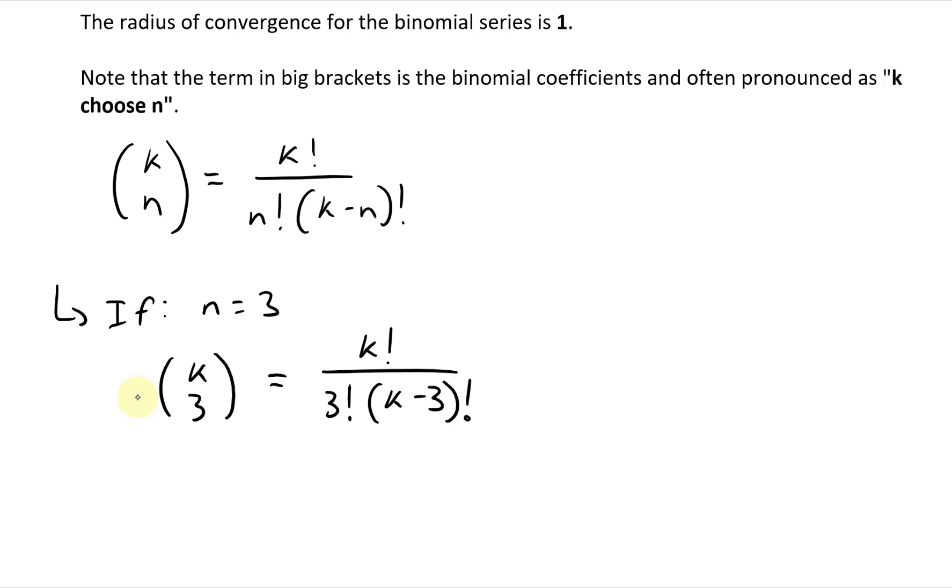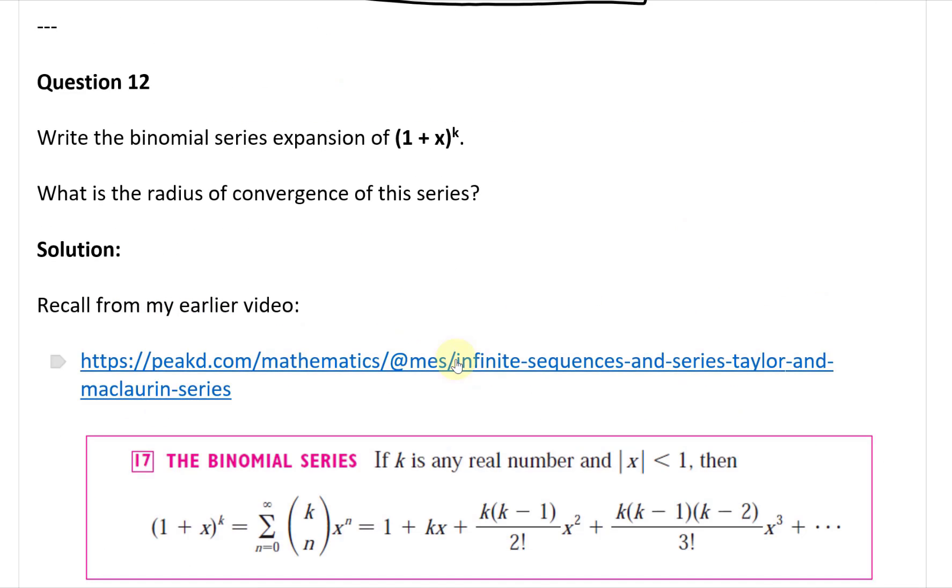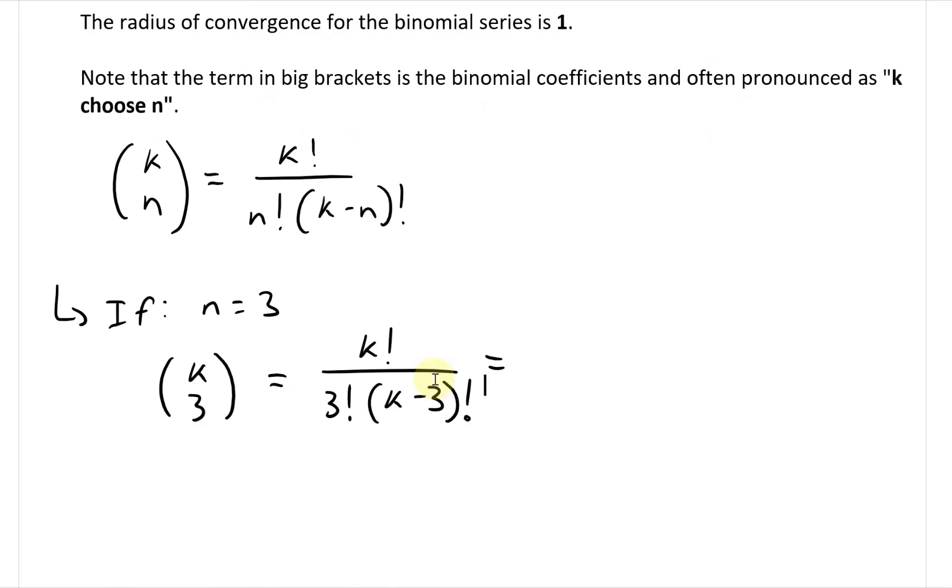So what this ends up being is, let's just expand the k. Let's say k is any real number, and the factorial expands out like this: k, then k minus 1, then k minus 2, then k minus 3.